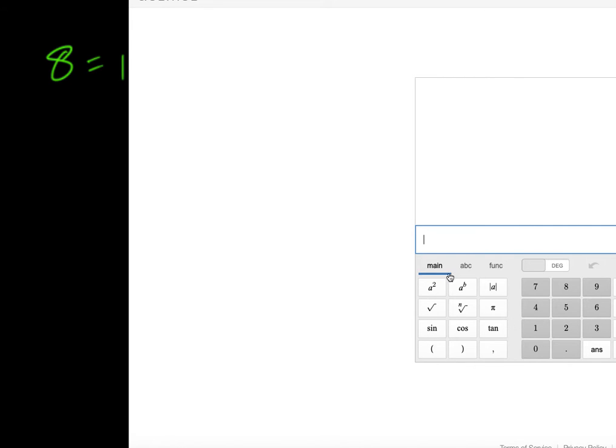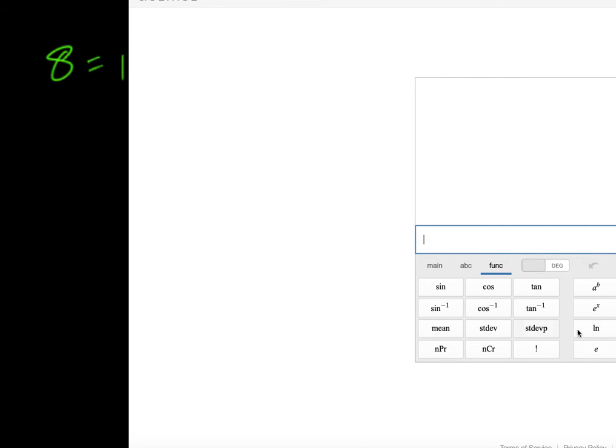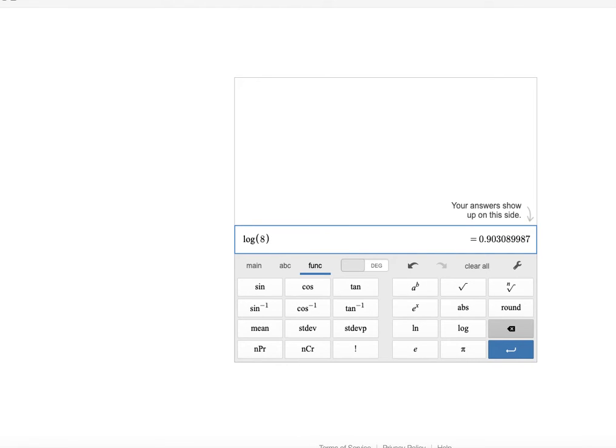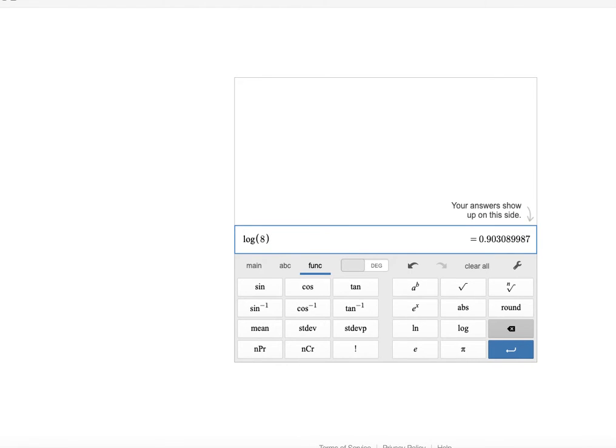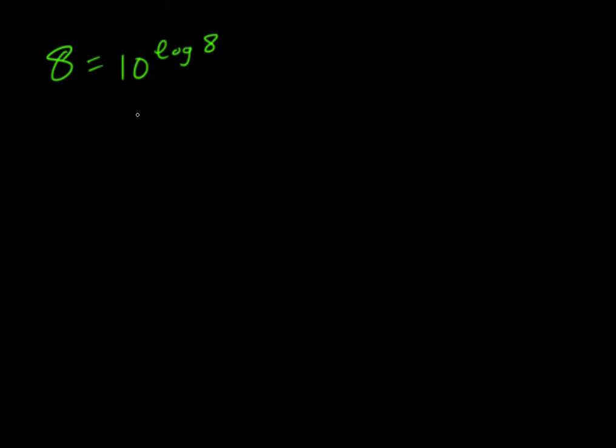If we're just given 8, what we're going to do is say that is 10 raised to the log of 8, and so we need to find out what log 8 is. We just type in log of 8 and that's 0.9031, so we get 10 to the 0.9031 is the same thing as 8.